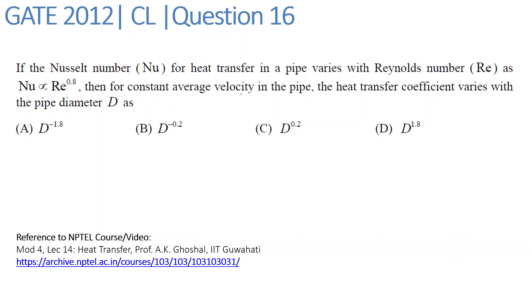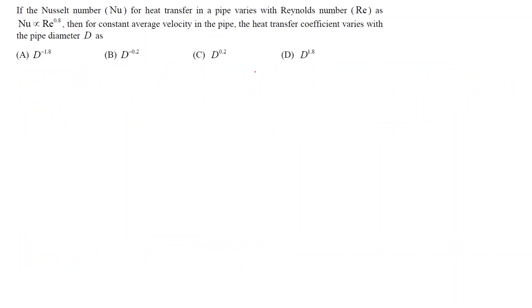Let's look at the solution. We have been given this correlation that Nusselt's number is proportional to Reynolds number raised to 0.8, and we have to find the relation between H and D.